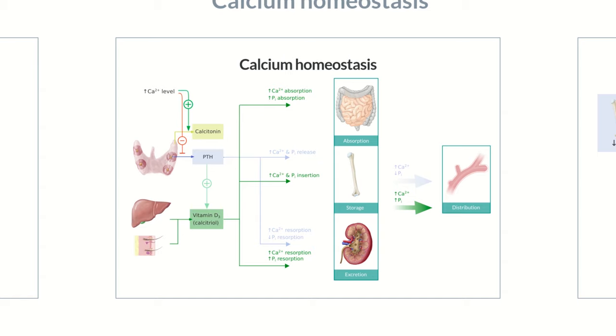In turn, calcitonin ensures that less calcium is absorbed from food. Also, it inhibits osteoclast activity and therefore the release of calcium and phosphate from the bones and facilitates their excretion via the kidneys. Therefore, calcitonin can lower calcium and phosphate blood levels. This is why it's also used as a therapeutic agent in hypercalcemia.